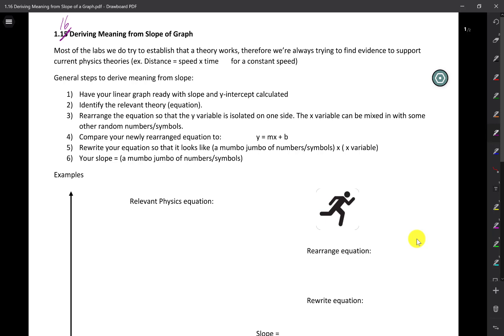Here are some general steps when we are deriving meaning from a slope. You must have your linear graph with the slope and the y-intercept calculated, ready to go. The second step is you want to find your relevant theory, rearranging that theory or that equation so that your y variable is isolated to one side. y is equal to mx plus b.